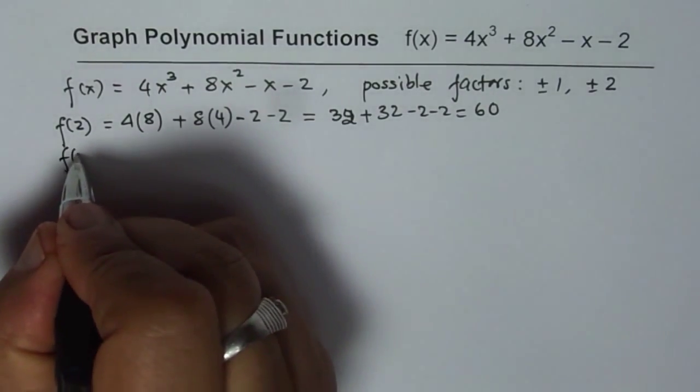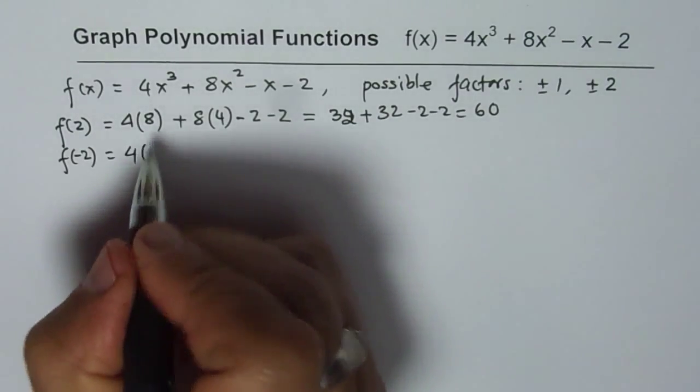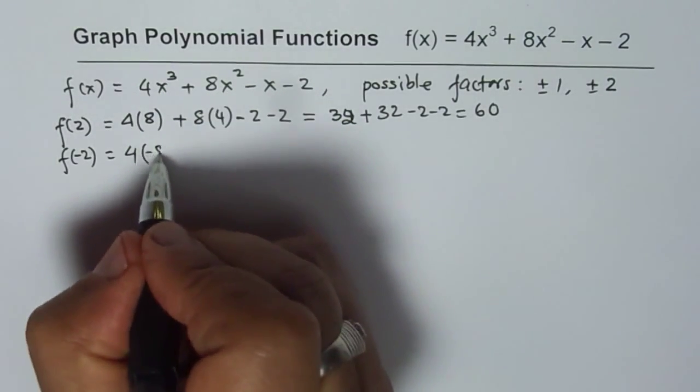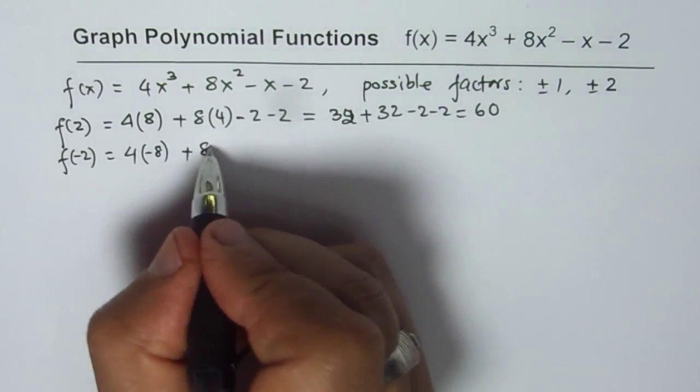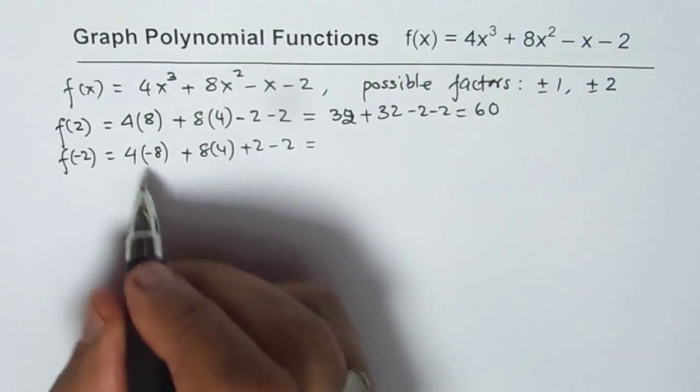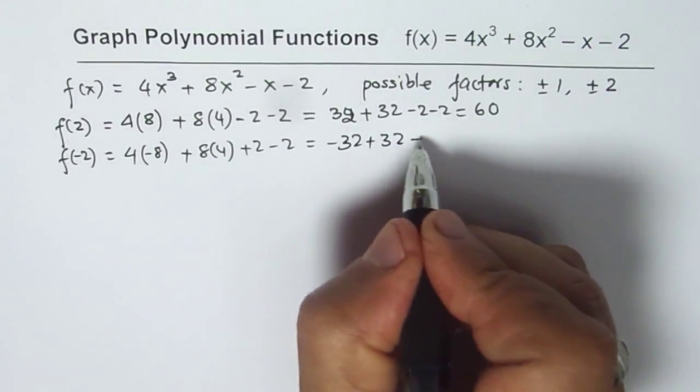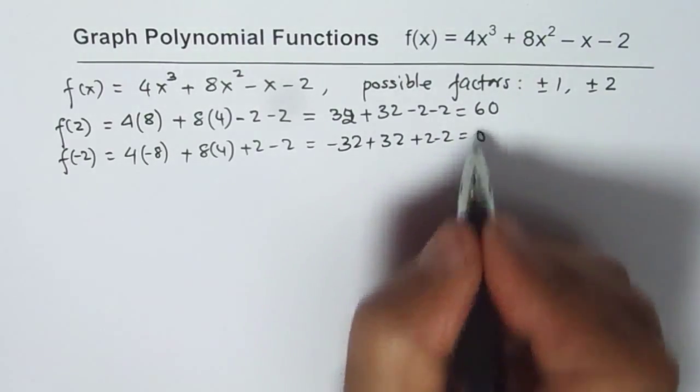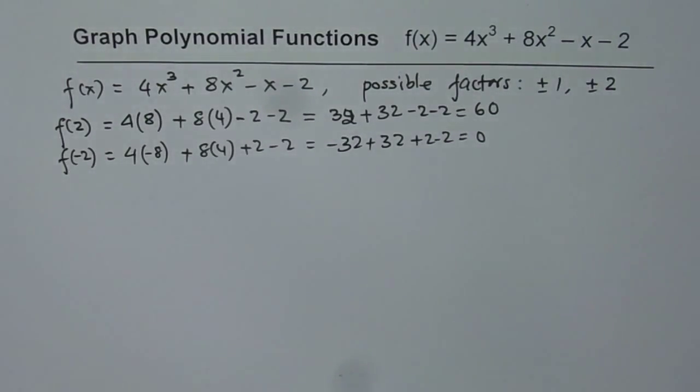How about f of minus 2? So if I put minus 2 here, I get 4, 2 cubed minus is negative 8, plus 2 minus is 8 plus. And this will make it plus 2 minus 2. So that gives us minus 32 plus 32 plus 2 minus 2 which is indeed 0. So with this, we got first a 0.